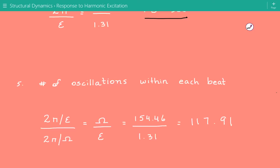And that's 154.46 divided by 1.31. And so the number of oscillations within each beat is equal to 117.91.